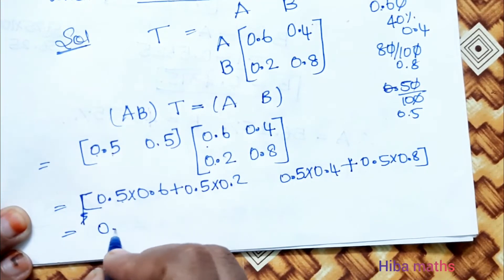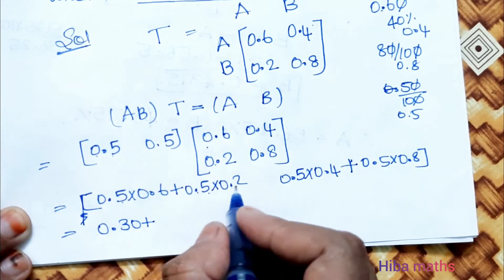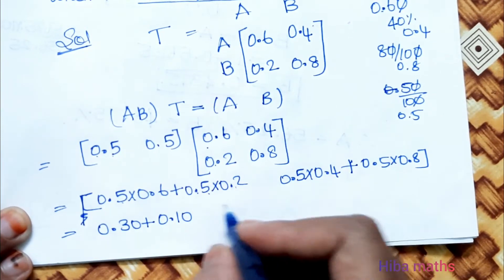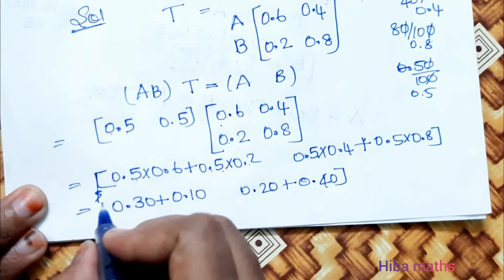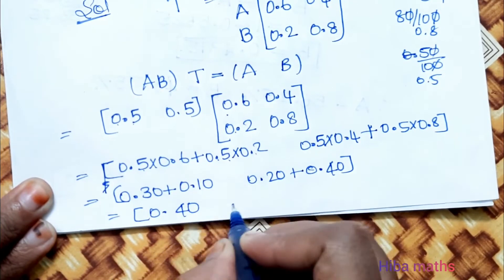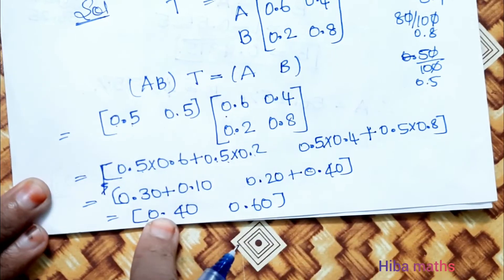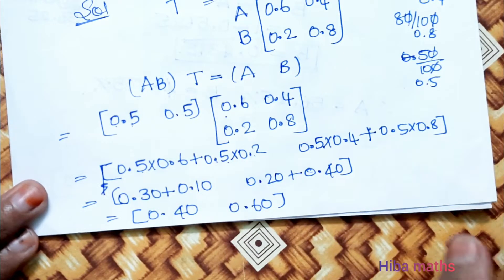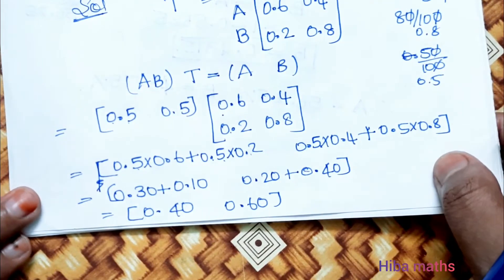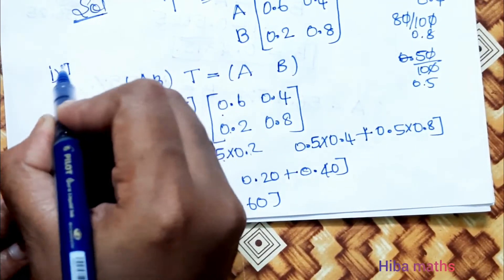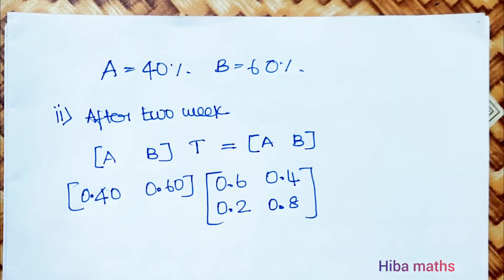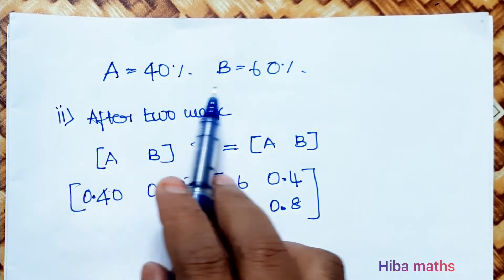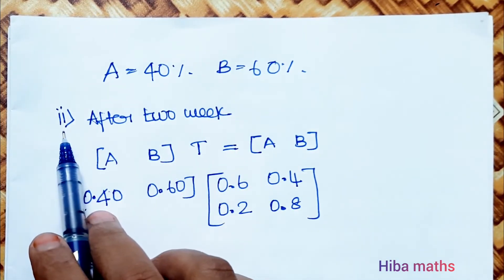Calculating: 0.5 × 0.6 = 0.30, plus 0.5 × 0.2 = 0.10, giving 0.40. And 0.5 × 0.4 = 0.20, plus 0.5 × 0.8 = 0.40, giving 0.60. So after one week, A = 40% and B = 60%.